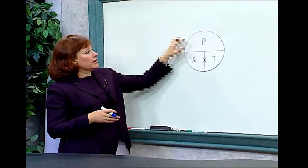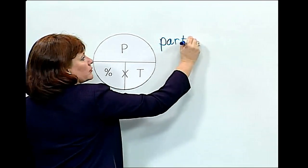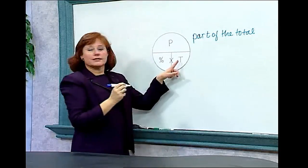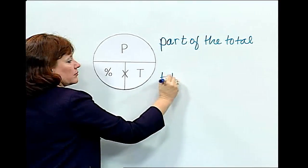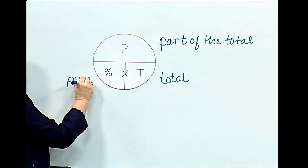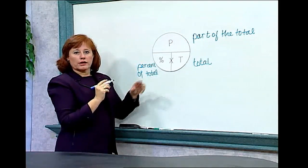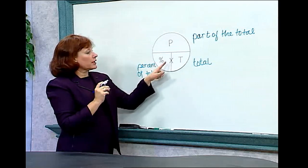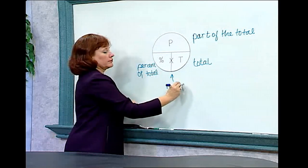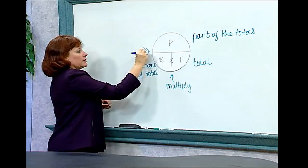If you look at the percent circle, there are several things you need to know about it. The top is a P, which stands for part, or part of the total. The T stands for the total. The percent sign obviously stands for the percent of the total. You also have some other symbols that are a little bit hidden but you have to be careful to include them. The X on that line means to multiply, and this horizontal line means to divide.